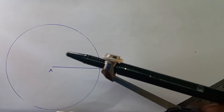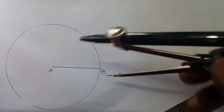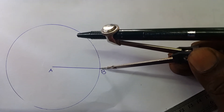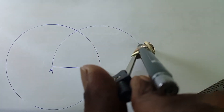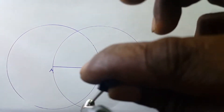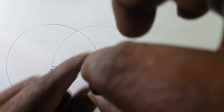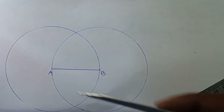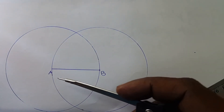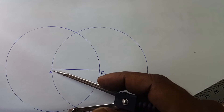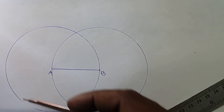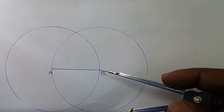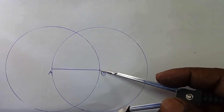Replace the compass point on B with the same 50mm radius and draw another circle here. We have to complete two circles: keeping A as center, draw the first circle with radius 50mm, and draw another circle keeping B as center.